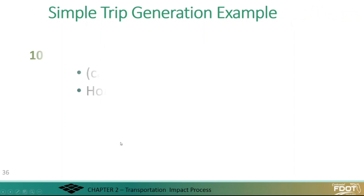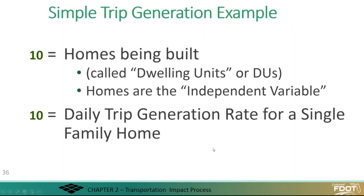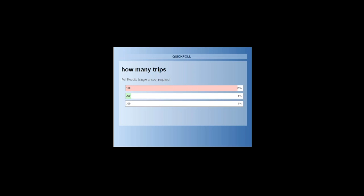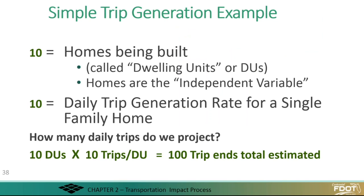Let's look at a simple trip generation example. Say we have 10 homes being built, and there are 10 daily trip generation rates for each single family home. Since the trip rates already include the car coming in and the car going out, the total is simply 10 homes times 10 trips, which equals 100 trips — not 10 times 10 times 2.